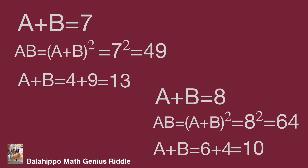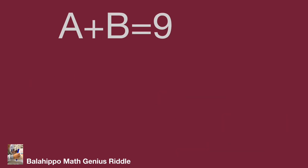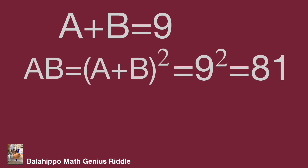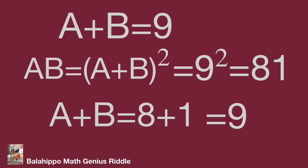Finally, while A plus B equals 9, AB equals the quantity A plus B squared equals 9 squared equals 81. Then A plus B equals 8 plus 1 equals 9. It is the same result! So AB equals 81 is the right number.